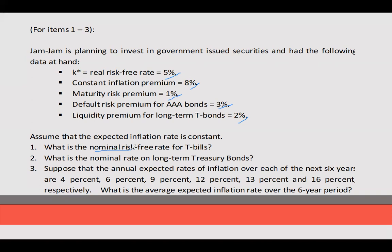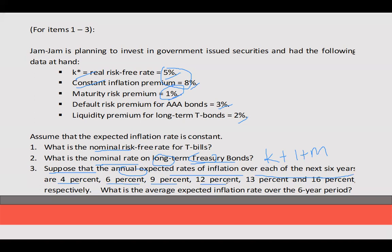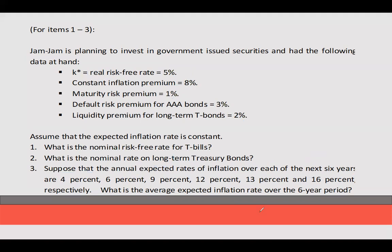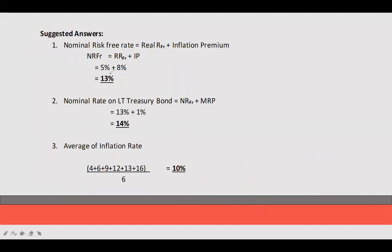What is the nominal risk-free rate? Just add the real risk-free rate and inflation premium: 5 plus 8 equals 13%. What is the nominal rate on a long-term treasury bond? A treasury bond has the real risk-free rate (K), inflation premium (I), and maturity risk premium (M). So 13 plus 1 equals 14%. For number 3, the annual expected inflation rates over the next 6 years are 4%, 6%, 9%, 12%, 13%, and 16%. The average inflation rate is computed by adding all rates and dividing by 6.